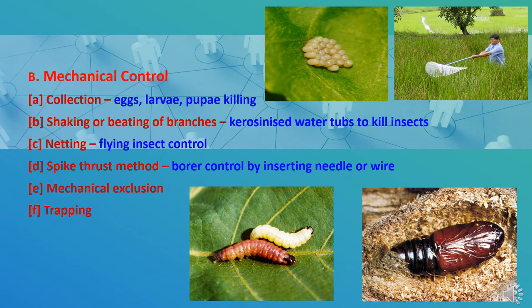Fourth is the spike thrust method, which is very useful against borers like sugarcane borer, mango stem borer, or other borers. The insects can be killed by inserting a needle or wire into the hole. Fifth is mechanical exclusion. Sixth is trapping, both of which we will discuss in detail.